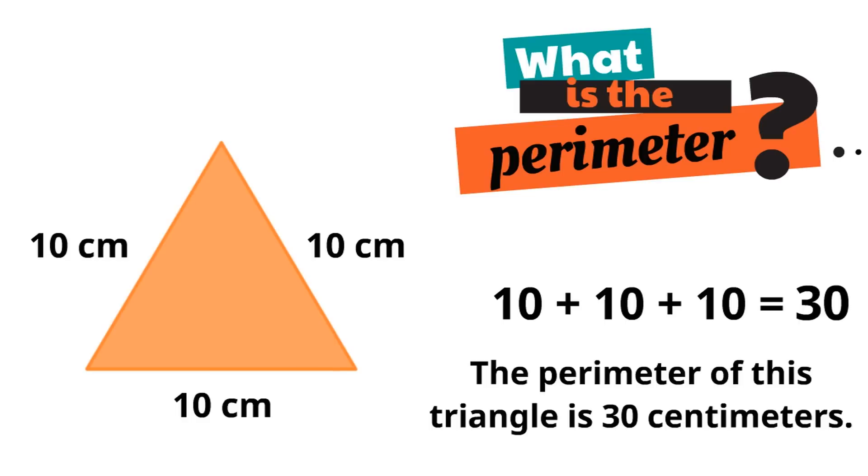Remember, CM is an abbreviation for centimeters. 30 centimeters is the perimeter of this triangle.